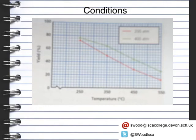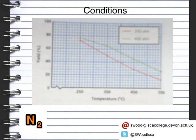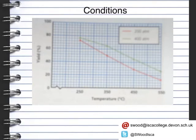At low temperature we're going to get more ammonia being produced. The reason we actually run the Haber process at 450 degrees is because the initial reaction between nitrogen and hydrogen speeds up with the increase in temperature — we get more collisions and more reaction at that initial stage. This is why we have the temperature set closer to 450 degrees.